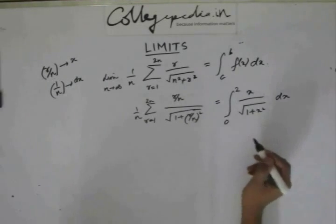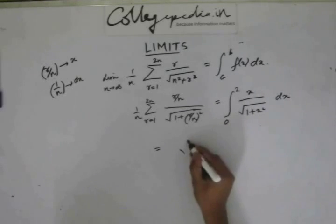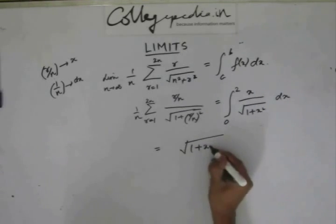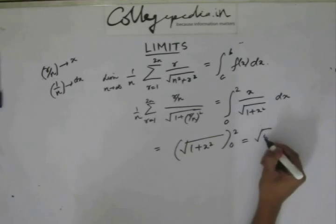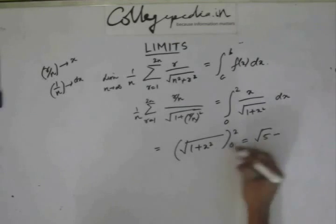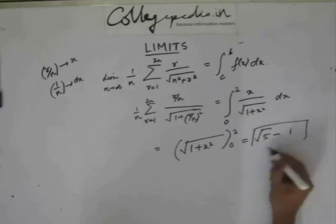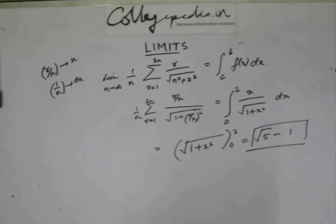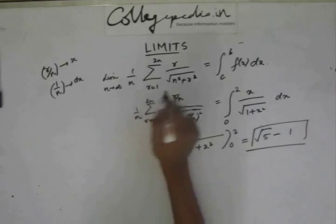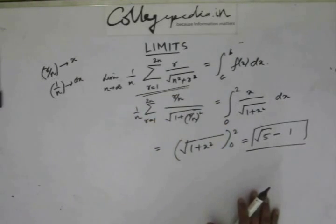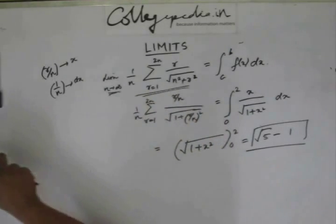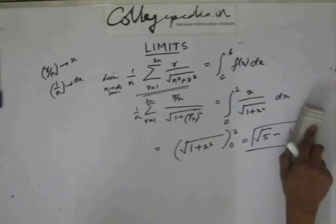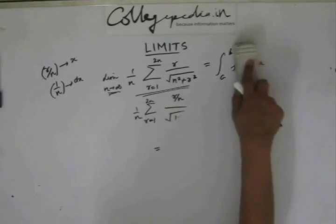The integration of x divided by the square root of 1 plus x squared is the square root of 1 plus x squared. Putting the limits 0 to 2: when I put 2 it gives root 5, and when I put 0 it gives 1. So the answer is root 5 minus 1. I hope you understand how to solve summation problems where n approaches infinity by converting them to definite integrals.